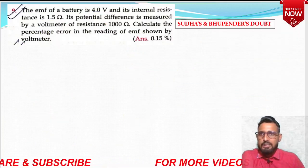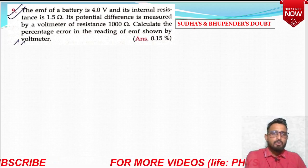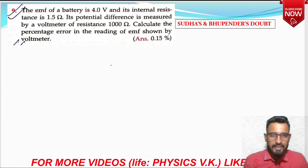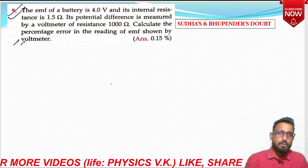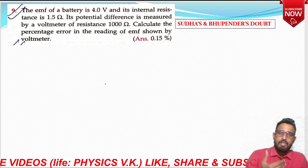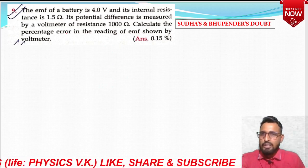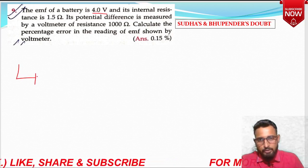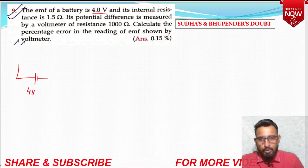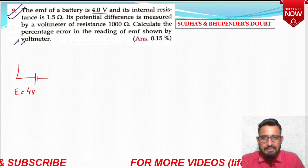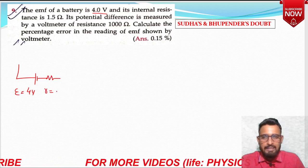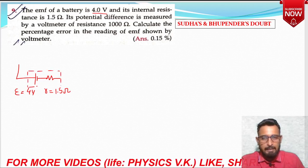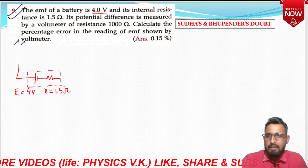Now we proceed to the next question. This doubt is from students Sudha and Bhupendra. Please do not hesitate to share your doubts — the more doubts you share, the more videos I'll bring. The question says: the EMF of a battery is 4V. So I draw a battery of EMF 4V with internal resistance 0.5 ohm — small r is 1.5 ohm. Its potential difference is measured by a voltmeter.